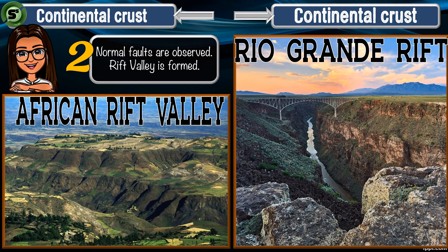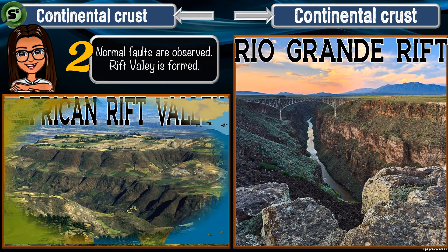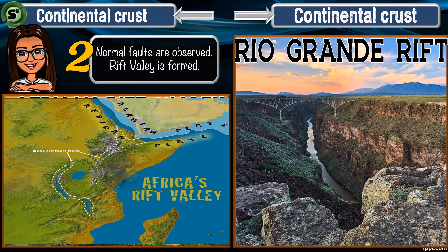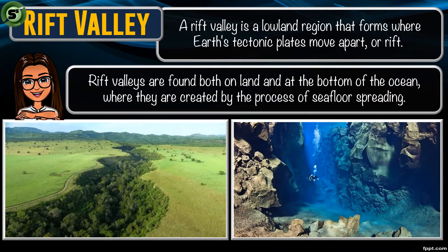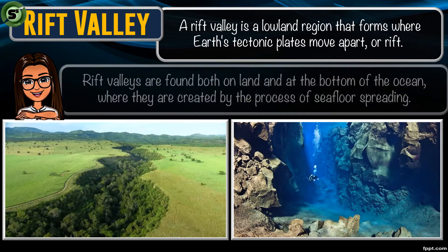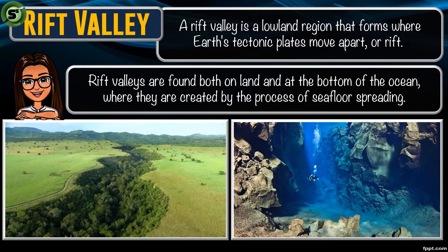The African Rift Valley and the Rio Grande Rift Valley are both evidences of the continuous separation of continental crusts. The Great Rift Valley of Africa indicates that the African continent is slowly breaking into two. A rift valley is a lowland region that forms where tectonic plates move apart or rift. Rift valleys are found both on land and at the bottom of the ocean, where they are created by seafloor spreading.